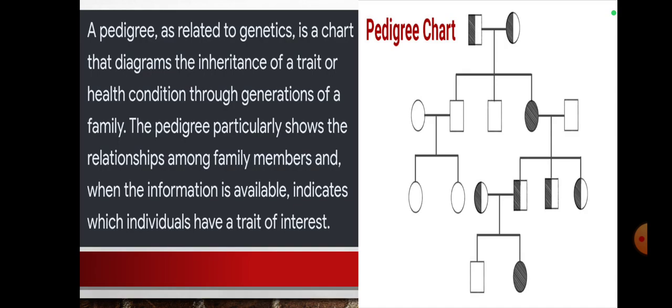A pedigree, as related to genetics, is a chart that diagrams the inheritance of a trait or health condition through generations of a family. The pedigree particularly shows the relationship among family members and, when the information is available, indicates which individuals have a trait of interest.